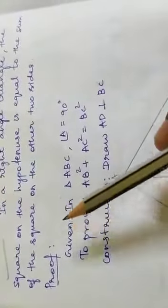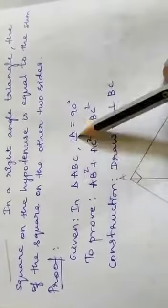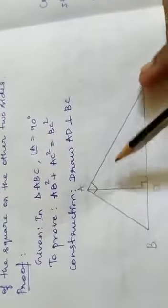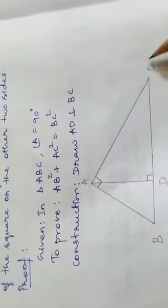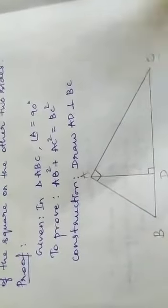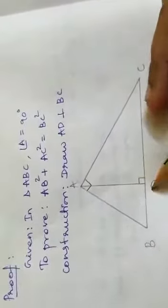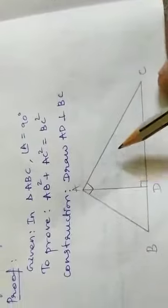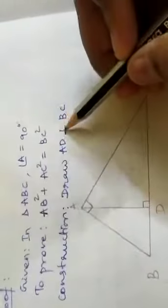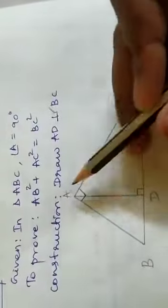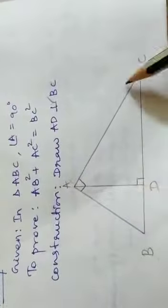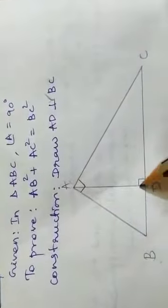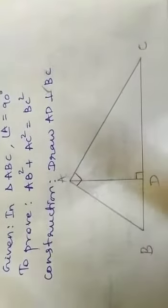Our proof is given: in triangle ABC, angle A equals 90 degrees. To prove: AB squared plus AC squared equals BC squared. Construction — draw AD perpendicular to BC, so angle D equals 90 degrees.